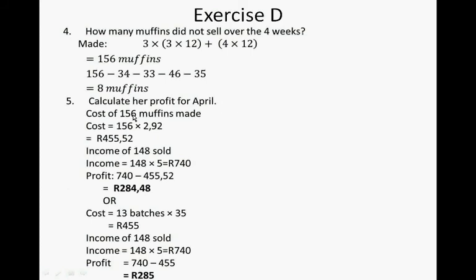Calculate the profit for April. The cost of 156 muffins was 2 Rand 92, so that is 455 Rand 52 cents. She sold 148 muffins for 5 Rand each, so that is 740 Rand income. The profit was 740 minus 455 Rand 52 cents, which is 284 Rand 48 cents. Or: the cost was 13 batches times 35 Rand equals 455 Rand. Income for 148 sold at 5 Rand each is around 285 Rand profit.